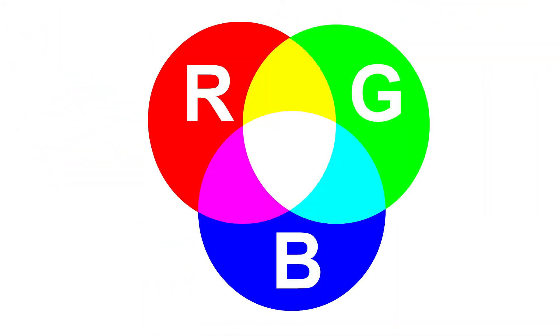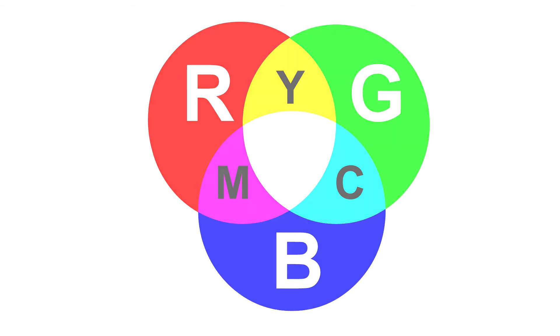Additive colors are emitted directly from a light source. Two additive colors combined produce the additive secondary colors — cyan, magenta, and yellow. All three primary colors combined produce white light.